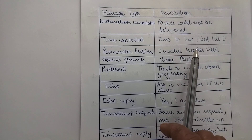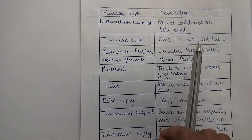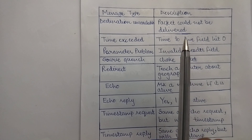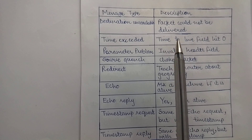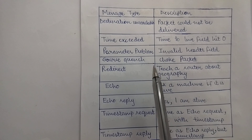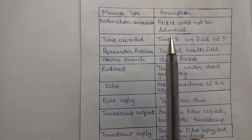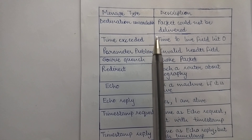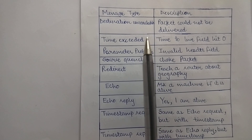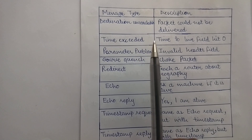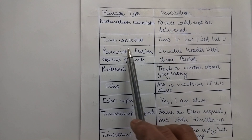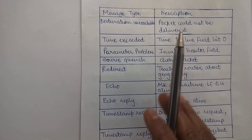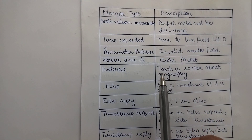The next message type is 'Time Exceeded.' This message is sent when a packet is dropped because its counter has reached zero. There is a certain time limit up to which a packet can remain in the network, and before that time expires the packet must be delivered. You cannot keep a packet roaming in the network indefinitely, so once the timer expires the packet is dropped. When the counter hits zero, the packet has expired.